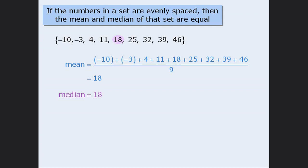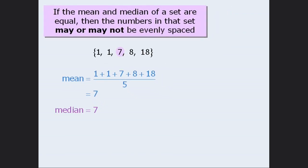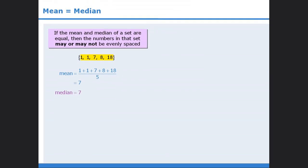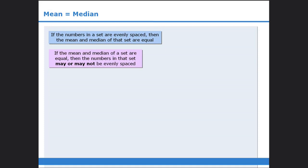Please note that the converse of this property is not necessarily true. We cannot conclude that if the mean and median of a set are equal, then the numbers in that set must be evenly spaced. All we can say is that the numbers may or may not be evenly spaced. Although the mean of this set is 7 and the median is also 7, we cannot conclude that the numbers in the set are evenly spaced. In summary, we learned that if a set consists of evenly spaced numbers, then the mean and median are equal, and that the converse is not necessarily true.